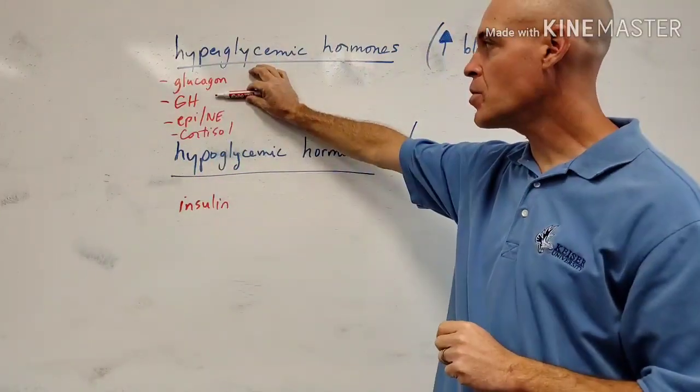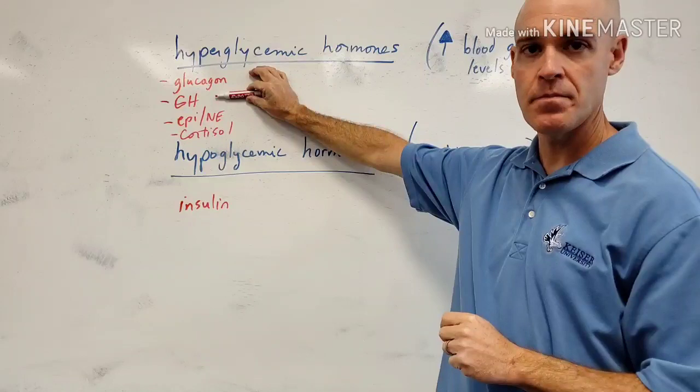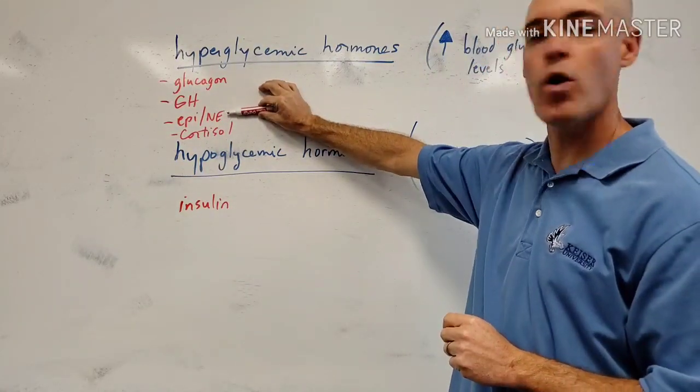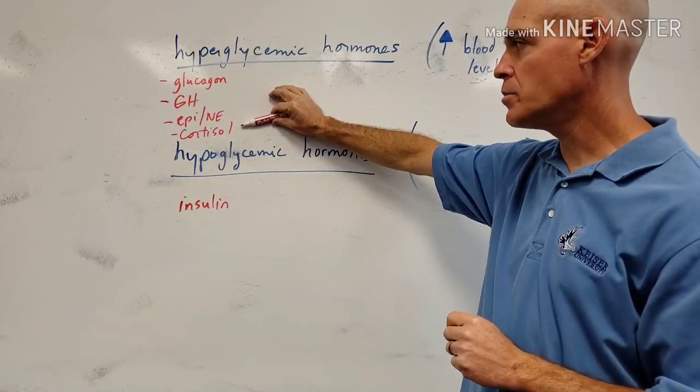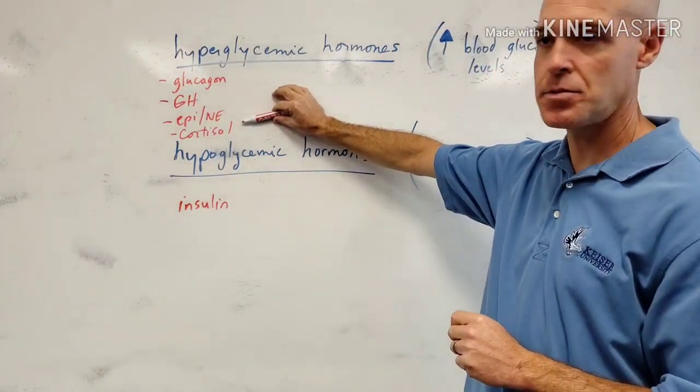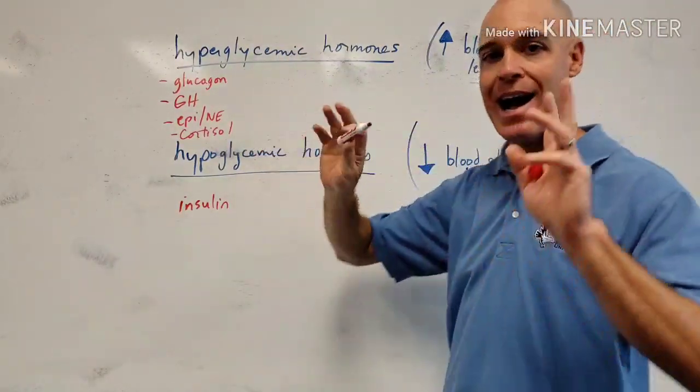Growth hormone comes from the anterior pituitary. Epinephrine and norepinephrine come from the adrenal medulla and cortisol comes from the adrenal cortex. So real quickly, those are hyperglycemic hormones.